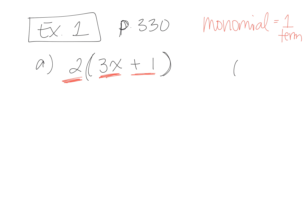If I wrote 5(2), what would the answer be? Ten. Okay, whenever you see brackets, you know that you have to multiply — you're taking five and multiplying it by two. So we're doing the same thing here, except you have to multiply the term outside the bracket and distribute it, multiplying it by everything inside the bracket in order.